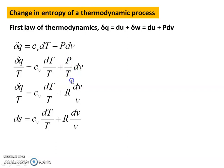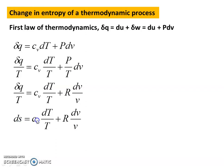Now, p/T — using the perfect gas equation pV = RT, we get p/T = R/V. So the equation becomes: del Q/T = Cv dT/T + R dv/V. From the Second Law of Thermodynamics, del Q/T = ds, where small s is the specific entropy. So, ds = Cv dT/T + R dv/V.